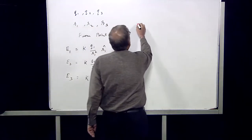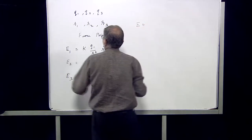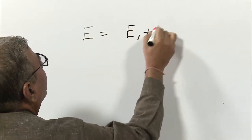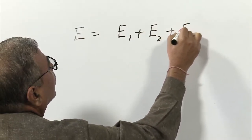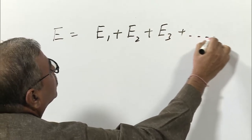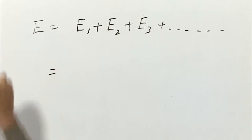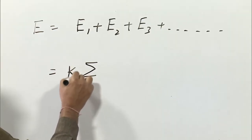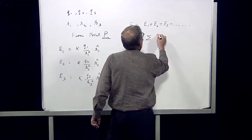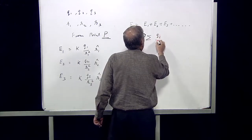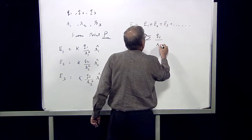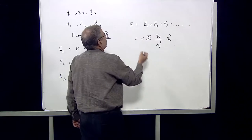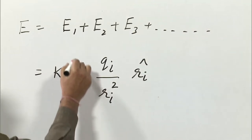The total electric field E will be equal to the vector sum of all these fields E1, E2, E3, and so on. E is equal to E1 plus E2 plus E3 plus so on. We can write it using summation notation as K times the summation of Qi upon Ri square, Ri cap, where the summation is from i equal to 1 to N.